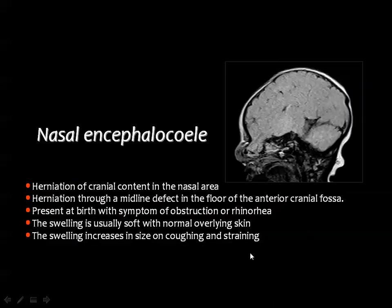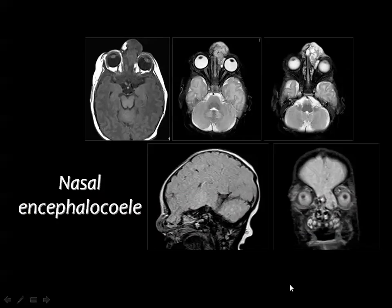MRI is very good in evaluation of this area, particularly when there is clinical suspicion of neural elements, because MRI can better show brain tissue and its characteristic signal similar to the intracranial brain, enabling accurate assessment of lesion contents before surgical interference. On T1-weighted images the fluid is dark; on T2-weighted images the fluid is bright. A nasal encephalocele can be assessed in sagittal and coronal images to evaluate the extent of brain tissue through the skull base defect.